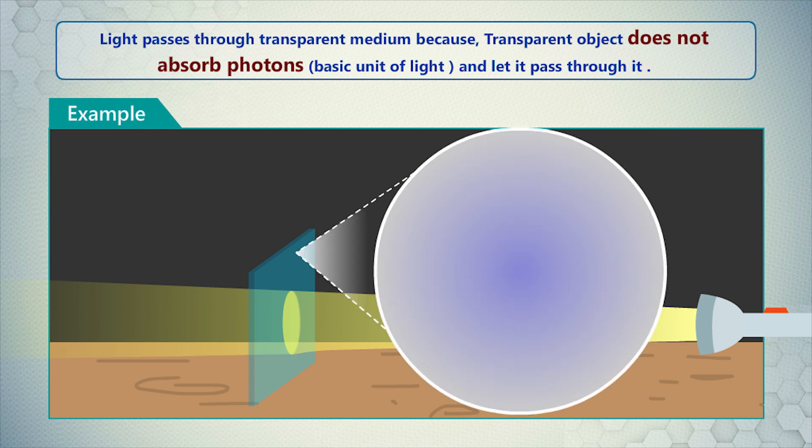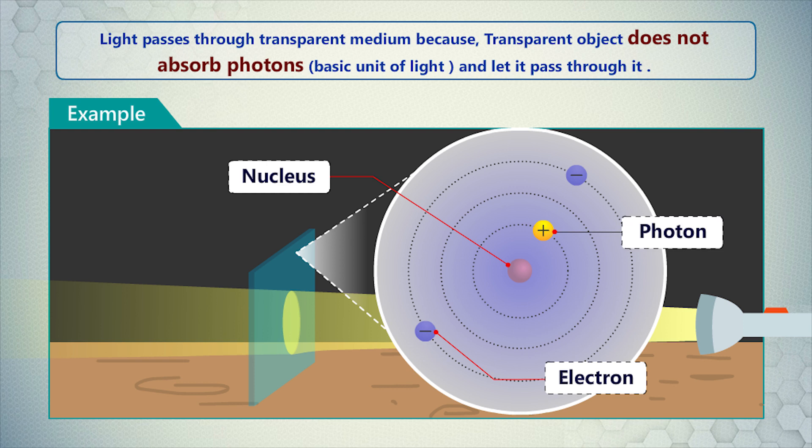This is due to gaps in between orbits of electrons of the substance. In transparent objects, the gaps between orbits of electrons are bigger, and hence, it lets photons pass through it.